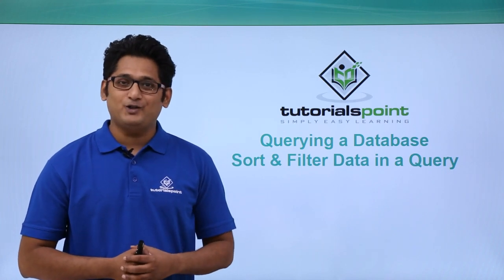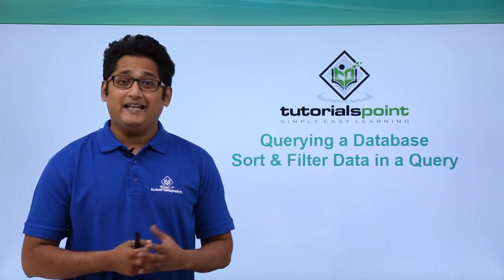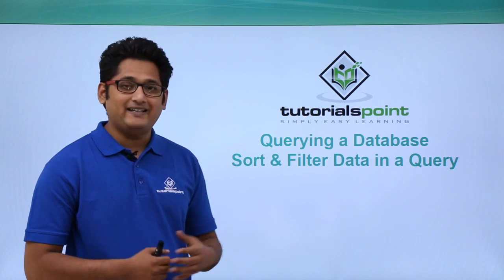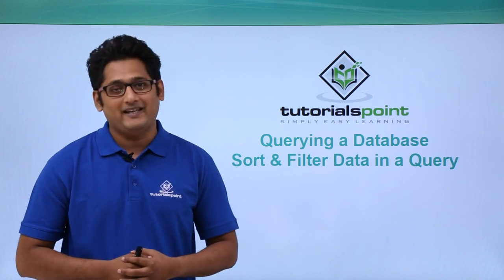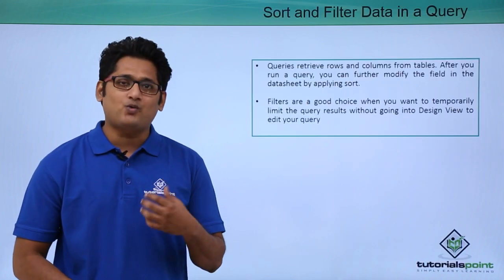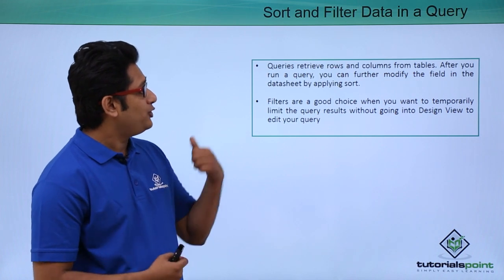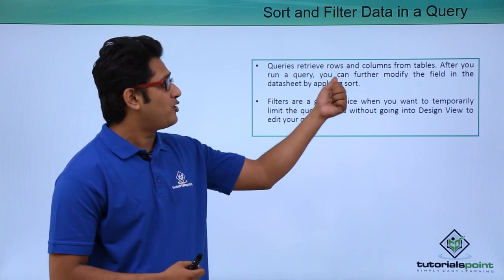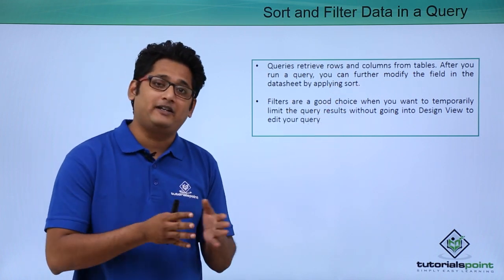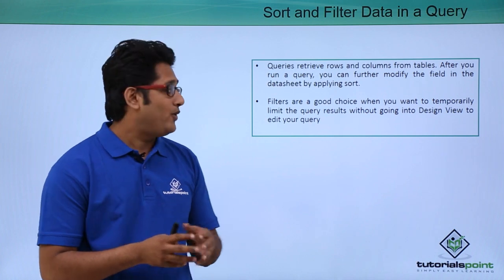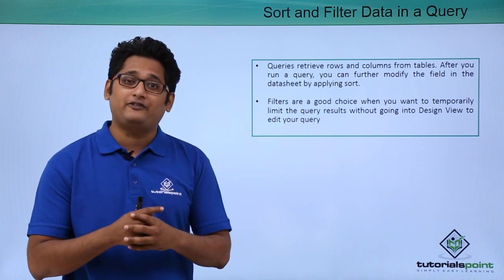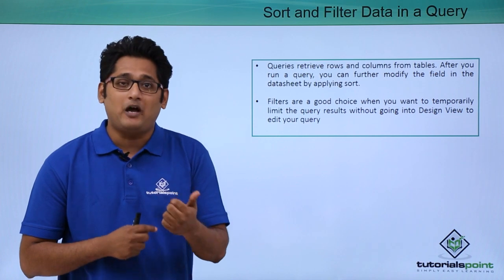Hello friends and welcome to Tutorial's Point. In this video we are going to learn how to sort and filter data in a query in Microsoft Access 2016. A query is basically used to retrieve rows or columns from the same table or from different tables. Whenever you run a query, you can further modify the fields by applying a sort.